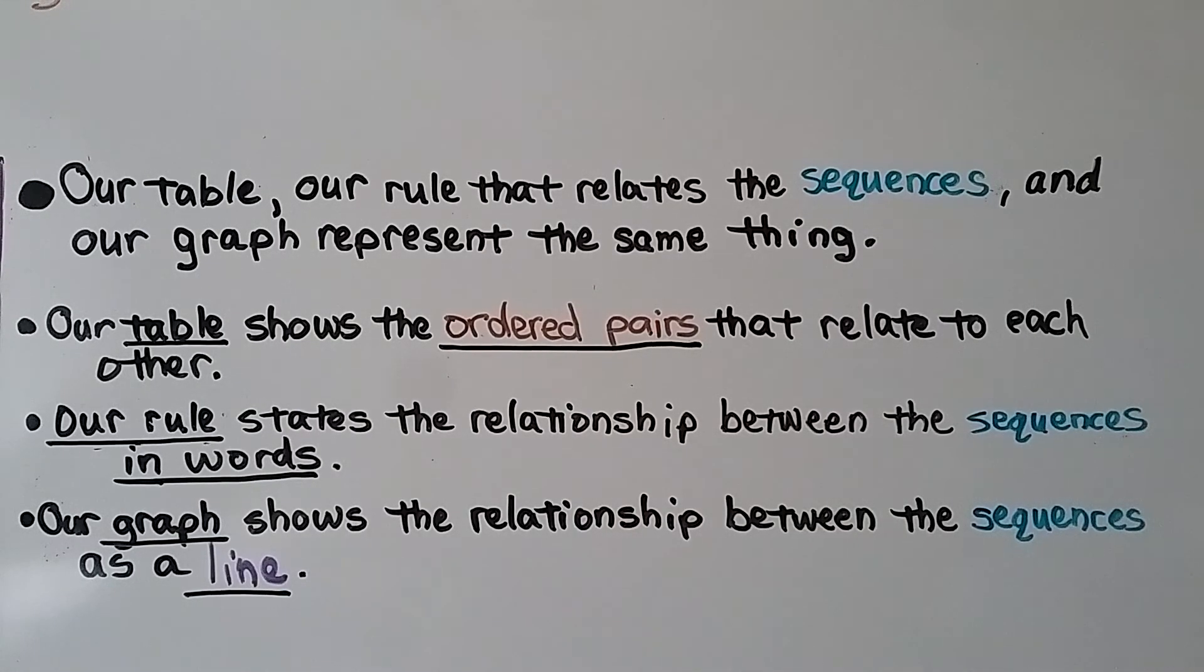Our table, our rule that relates the sequences, and our graph represent the same thing. Our table shows the ordered pairs that relate to each other. Our rule states the relationship between the sequences in words. And our graph shows the relationship between the sequences as a line.